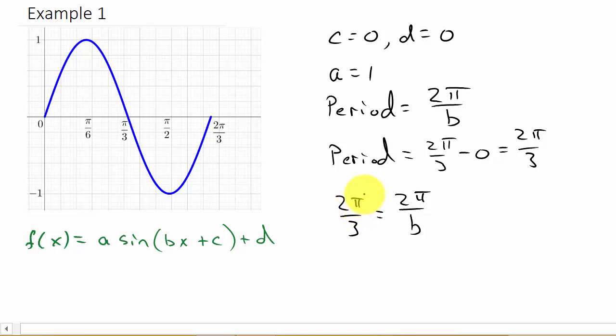You've got the two pi, the two pi, so that means three is equal to b.